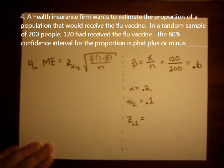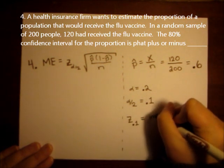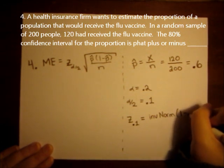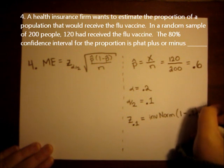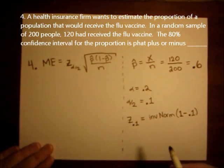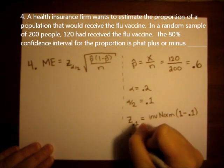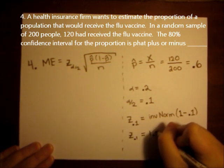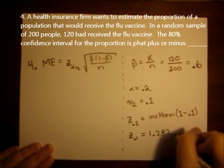And the way we found this on our calculator was inverse norm of 1 minus the subscript. So if you do inverse norm of 1 minus 0.1 or inverse norm of 0.9 on your TI 83 or 84, we get z of 0.1 equals 1.282.